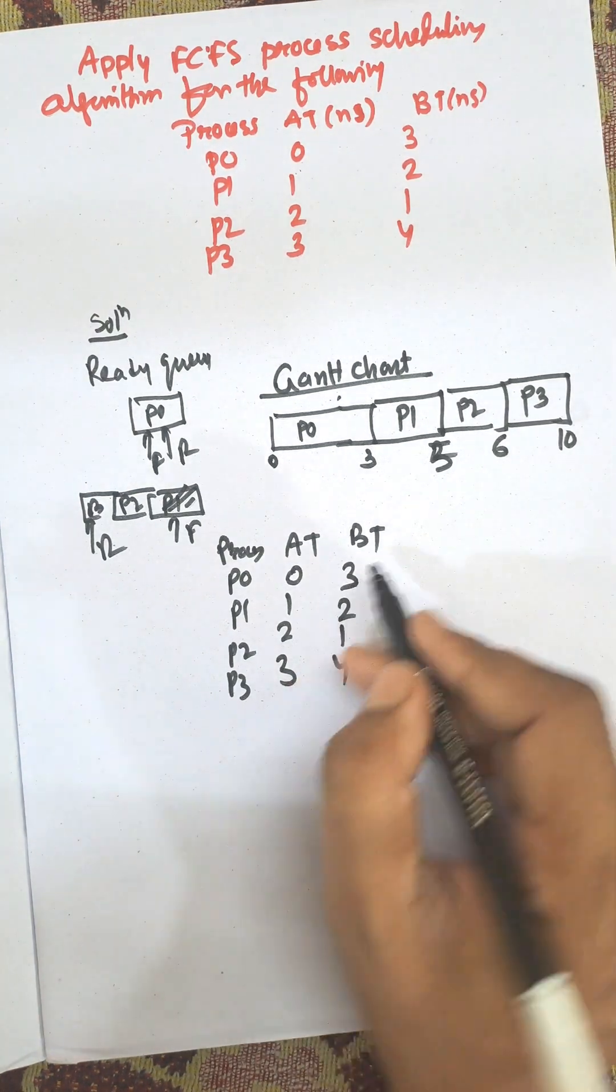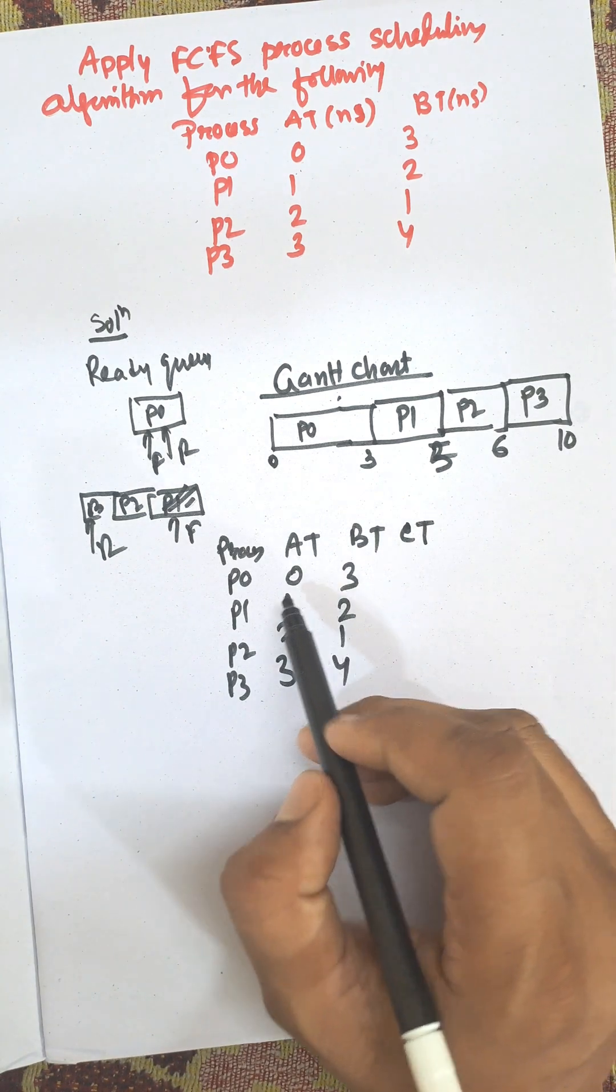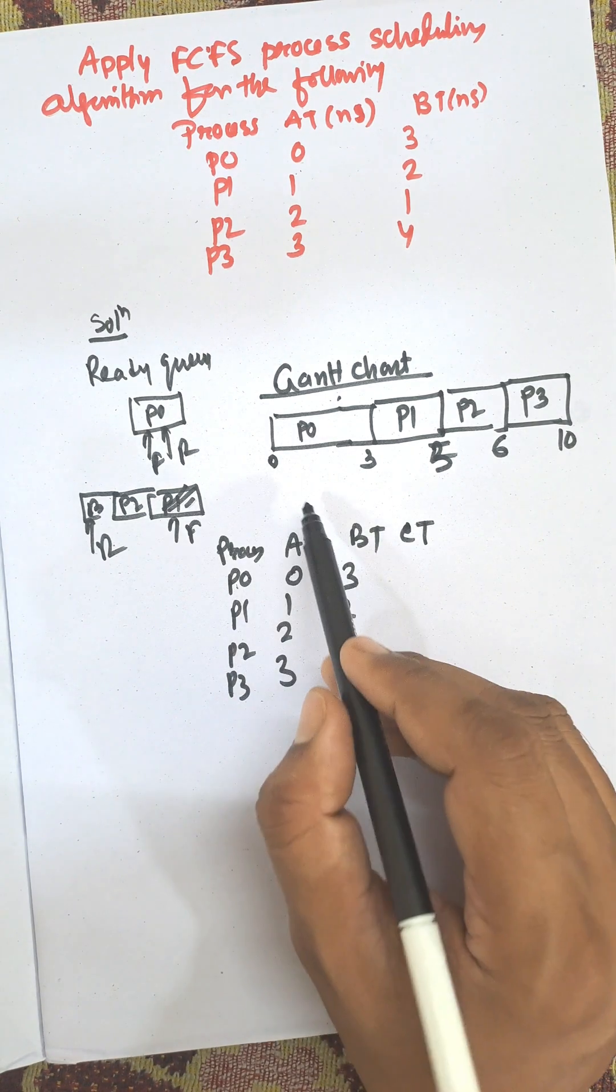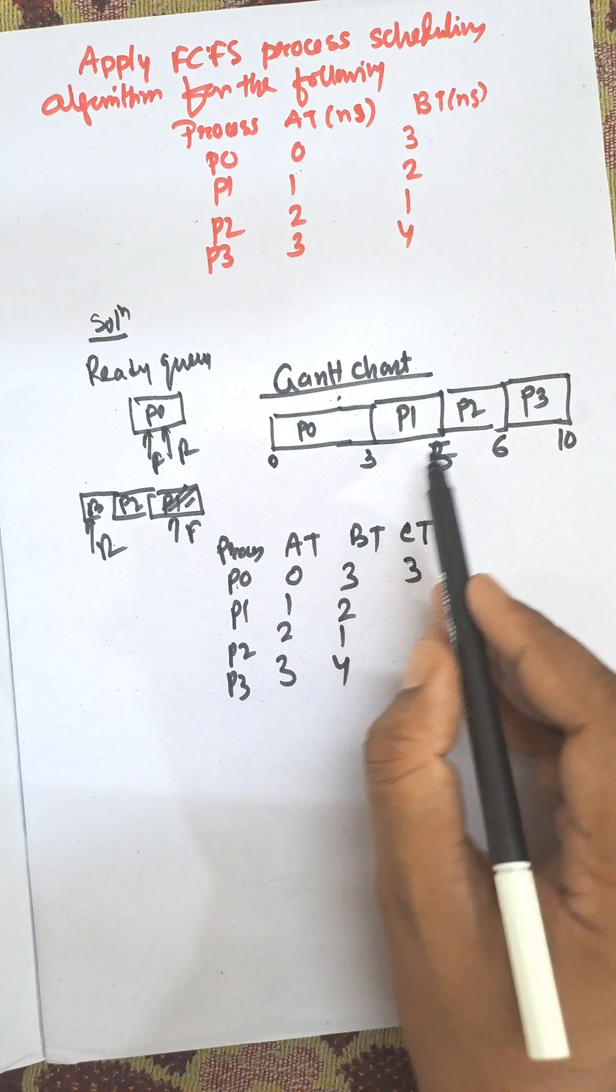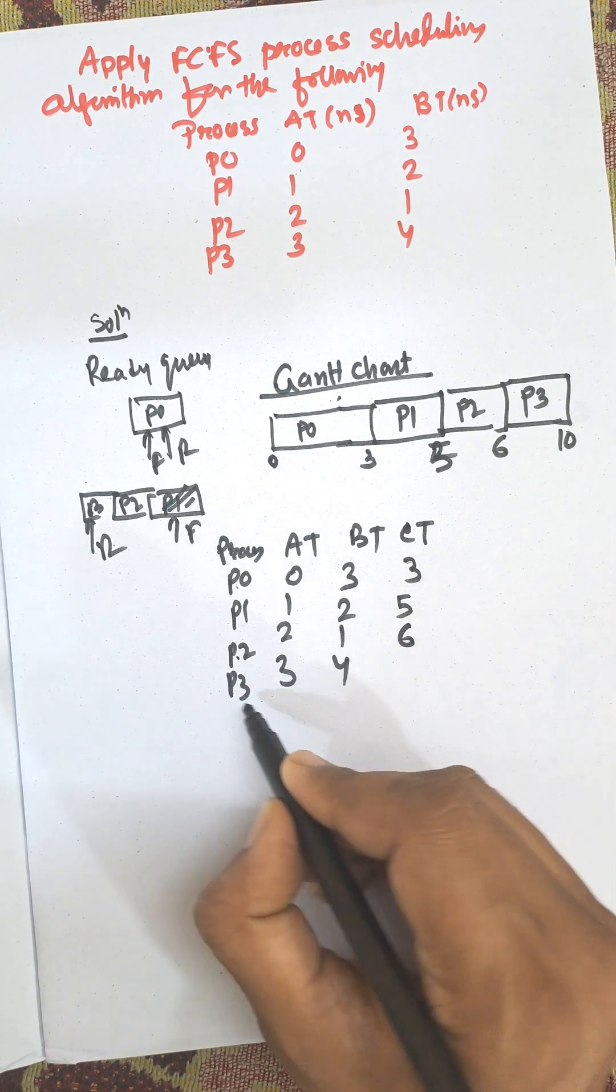First, we need to calculate the completion time in nanoseconds. Completion time means when the process is completed. P0 is completed at 3, P1 is completed at 5 nanoseconds, P2 is completed at 6, and P3 is completed at 10 nanoseconds.